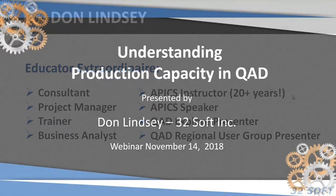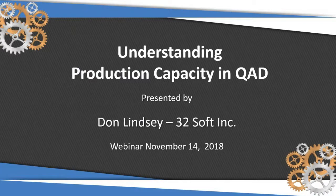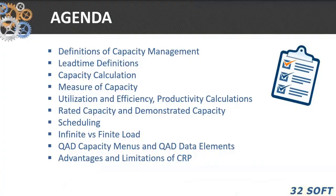Don, if you are ready. Today we want to talk about capacity in QAD. The agenda for today: we're going to try and define capacity. We'll talk about lead time, some capacity calculations used by QAD, some measures of capacity — utilization, efficiency, and productivity. We'll talk about rated and demonstrated capacity, scheduling and how QAD does the CRP calculation, infinite and finite loading, and the specific menus within QAD that help us with capacity planning. Then we'll talk about some advantages and limitations of using CRP.